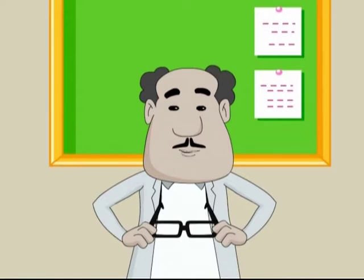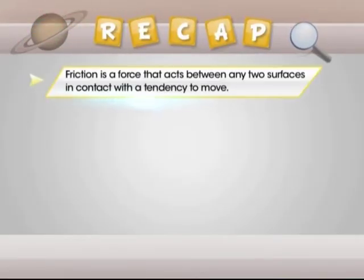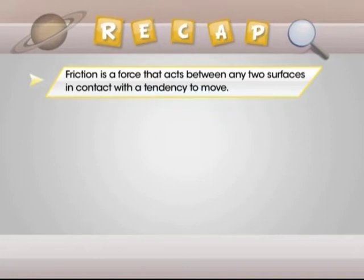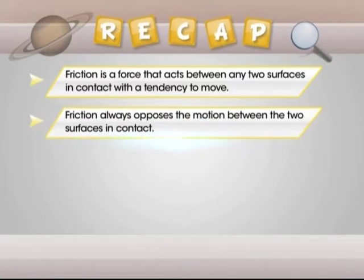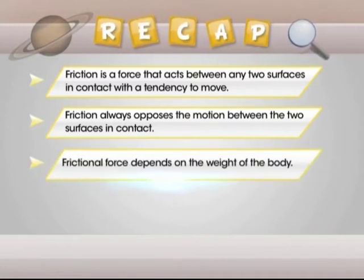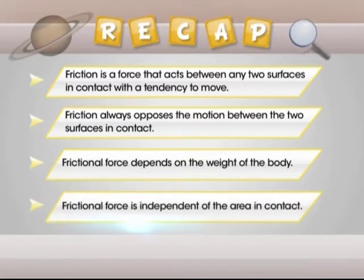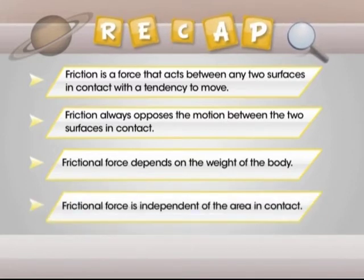Alright! Let's have a quick recap. Friction is a force that acts between any two surfaces in contact with a tendency to move. Friction always opposes the motion between the two surfaces in contact. Frictional force depends on the weight of the body. Frictional force is independent of the area in contact.